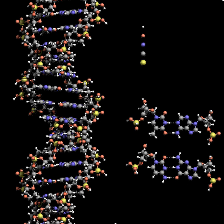Many mutagens fit into the space between two adjacent base pairs — this is called intercalation. Most intercalators are aromatic and planar molecules; examples include ethidium bromide, acridines, daunomycin, and doxorubicin. For an intercalator to fit between base pairs, the bases must separate, distorting the DNA strands by unwinding of the double helix. This inhibits both transcription and DNA replication, causing toxicity and mutations.